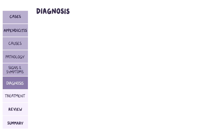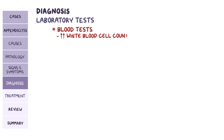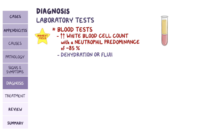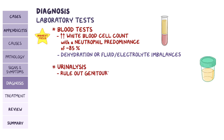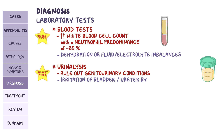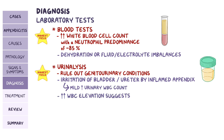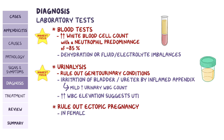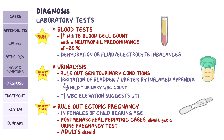Diagnosis of appendicitis can be done with laboratory and imaging tests. Blood tests will show increased white blood cell count, with a neutrophil predominance of around 85%. Blood tests may also show dehydration or fluid and electrolyte imbalances. Further investigation is needed to rule out other causes of abdominal pain. A urinalysis should be done to rule out genitourinary conditions. Irritation of the bladder or ureter by an inflamed appendix may result in mildly elevated urinary white blood cell count, while a significant elevation suggests a urinary tract infection. Remember to rule out an ectopic pregnancy in females of childbearing age. Postmenarchal pediatric cases should get a urine pregnancy test, and adults should obtain a serum pregnancy test.